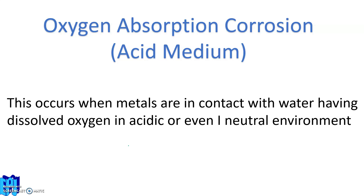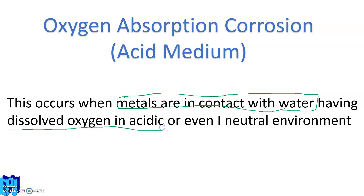This type of corrosion occurs when metals are in contact with water having dissolved oxygen. This is the main point. Dissolved oxygen in acidic or even in neutral environment — acidic environment or neutral environment where moisture might be in contact with water. Acidic moisture containing the oxygen in dissolved form leads to oxygen absorption corrosion taking place in acidic medium.